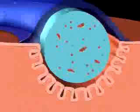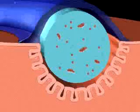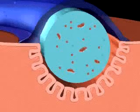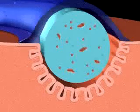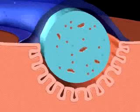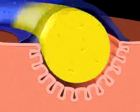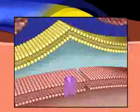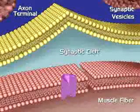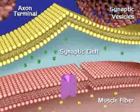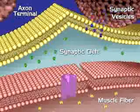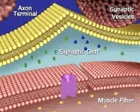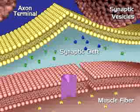Zooming into the microscopic level, each branch of the neuron has a terminal that invaginates the muscle fiber while remaining outside the muscle fiber plasma membrane. The action potential arrives at the axon terminal, where it causes the release of acetylcholine from the synaptic vesicles into the space between the axon terminal and the muscle fiber.